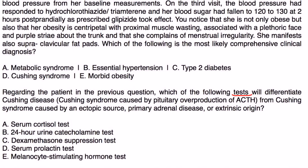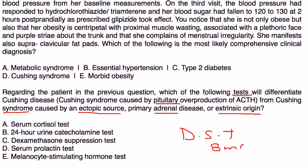Vignette 2: Regarding the same patient, which test will differentiate Cushing's disease — pituitary overproduction of ACTH — from Cushing's syndrome caused by an ectopic source, primary adrenal disease, or extrinsic origin? The answer is the high-dose dexamethasone suppression test using eight milligrams, which allows you to identify whether the primary source is adrenal, pituitary, or ectopic.